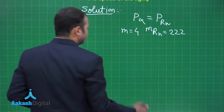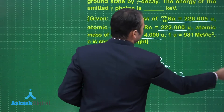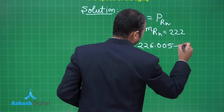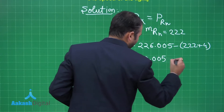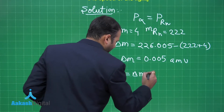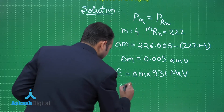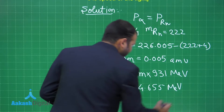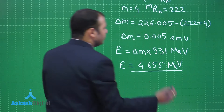Let's find the mass defect. Delta M equals mass of radium, which is 226.005, minus (222 + 4), giving us 0.005 AMU. This is the mass defect. The energy released is Delta M × 931 MeV, since 1 AMU = 931 MeV. So E = 4.655 MeV. This energy is released and is contained in two particles — the radon nucleus and the gamma photon.